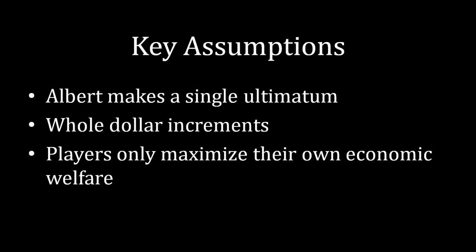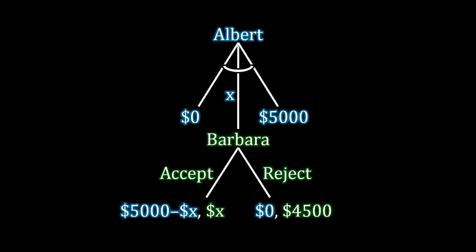Those are the critical assumptions we see in the ultimatum game. In the next lecture, we'll actually get to solving it — we'll draw a game tree and see what happens when Albert and Barbara negotiate over the car. Hope you enjoyed this lecture and hope to see you next time.